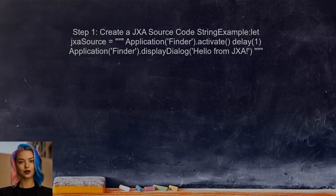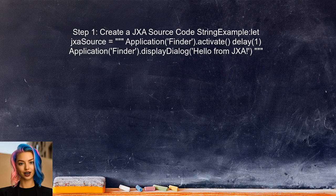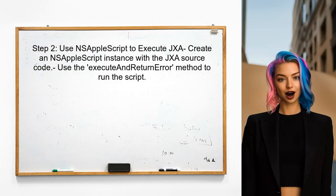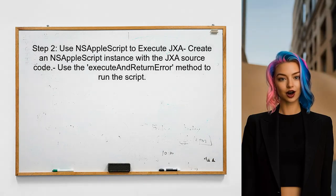To run JavaScript for Automation, or JXA, from Swift, you first need to create a string variable that contains the JXA source code — this is the code that will be executed. Next, you would normally look to the nsAppleScript class to execute the JXA code; however, since nsAppleScript is designed for AppleScript, we will use a different approach.